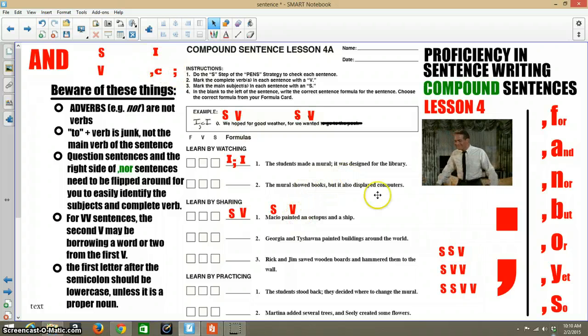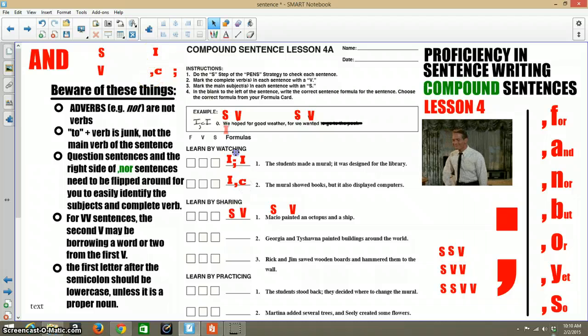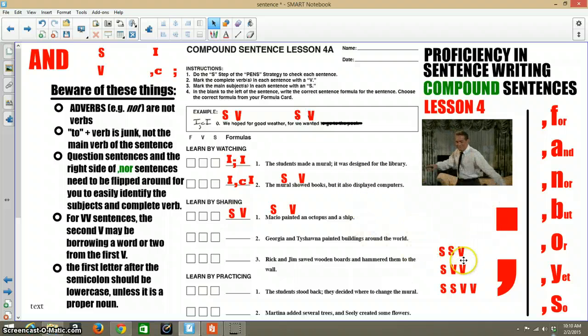Pretty easy to account for. This one is comma C, comma, but is the fanboy. Coordinating conjunction, fanboy, same thing. So on this one, the formula will end up being I, comma C, I. Alright, so we've got to identify the first independent clauses formula. The mural showed. Now over here is going to be S, S-V, S-V-V, or whatever. Some kind of formula like that.